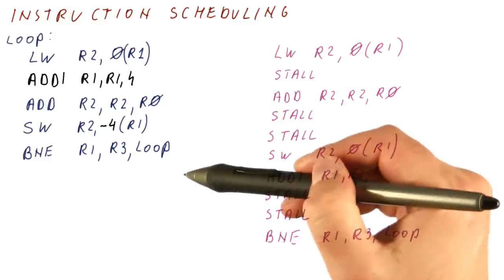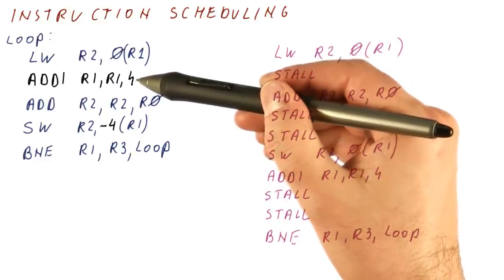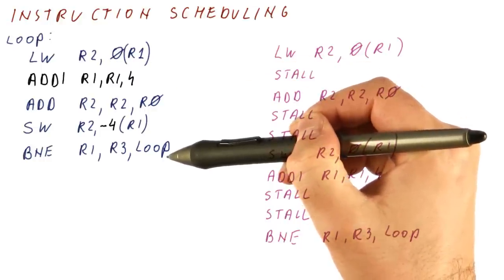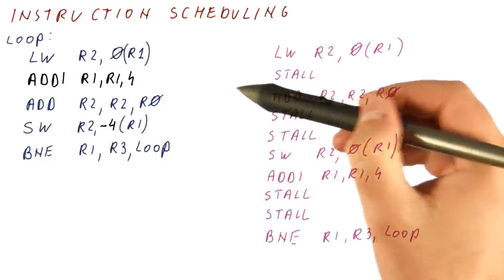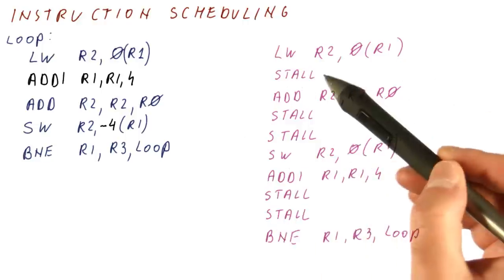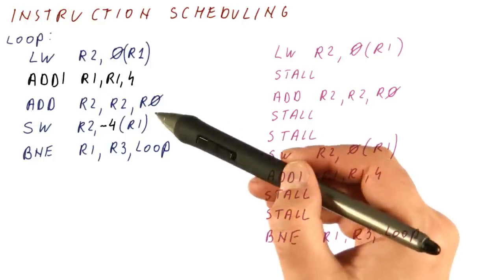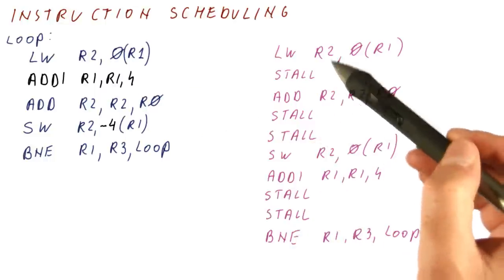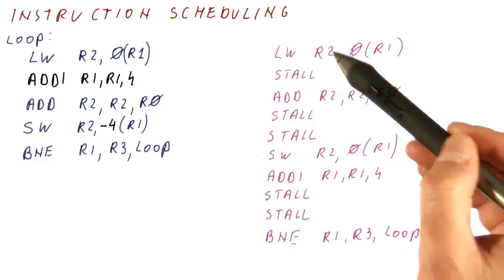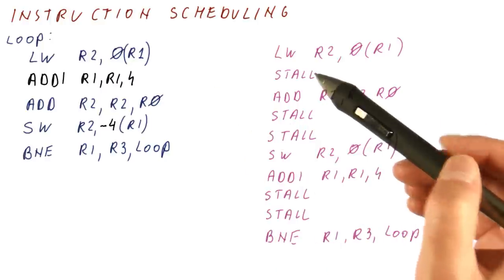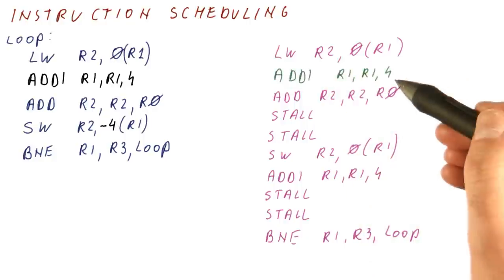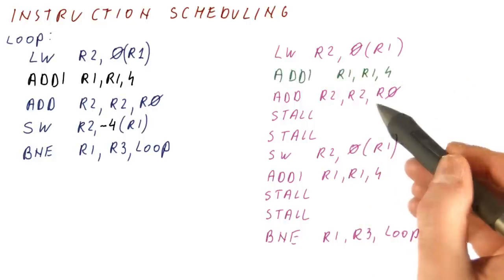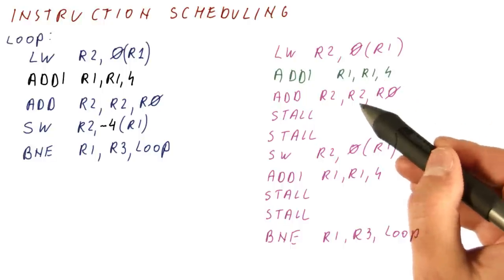And the new program looks like this. The black stuff is the stuff that has moved or changed. And the blue stuff is what has remained exactly the same as before. Now let's see what happens to our schedule. Now we have a load. And instead of the add here being the next instruction so we had to stall, the next instruction is this add. This add can proceed in parallel with the load. It doesn't depend on the R2. So we can actually do this add here. So instead of a stall, we can now do our add i. This eliminates one of the stalls. The add here doesn't depend on this add, so it can still stay where it is.